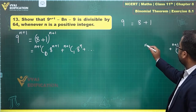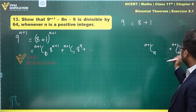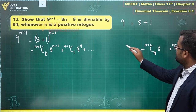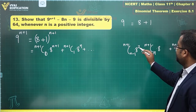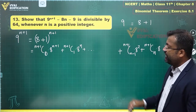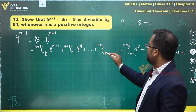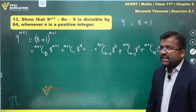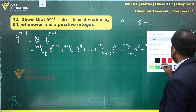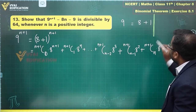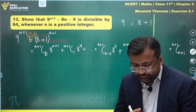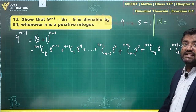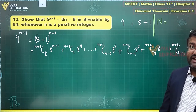The term before last is (n+1)Cn · 8^1 · 1^n, which is just (n+1)Cn · 8. Before that is (n+1)C(n-1) · 8² , and (n+1)C(n-2) · 8³, and so on. Now, in case of divisibility, one important thing is that if some number N is divisible by k, then N can be written as k times some integer lambda.